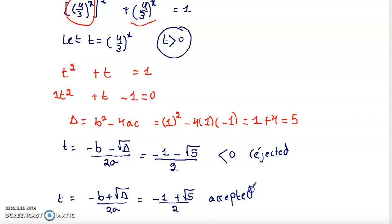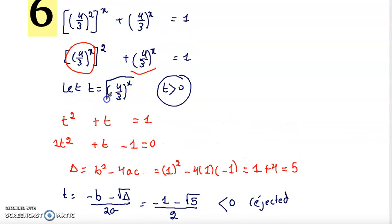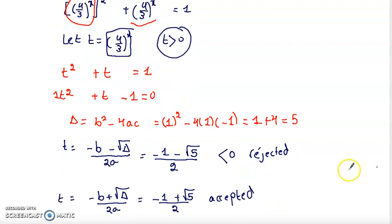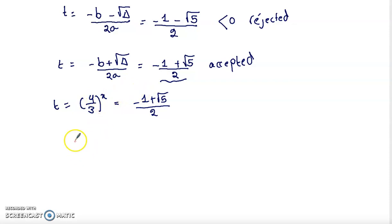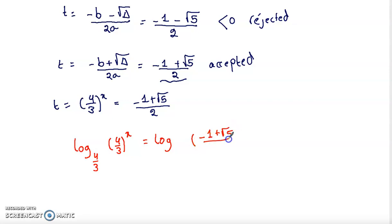We know that t equals (4 over 3) to the power x, so (4 over 3) to the power x equals (minus 1 plus root 5) over 2. To find x, we apply the logarithm with base (4 over 3) on both sides. Using the identity log base a of a equals 1, we get x equals log base (4 over 3) of (minus 1 plus root 5) over 2.